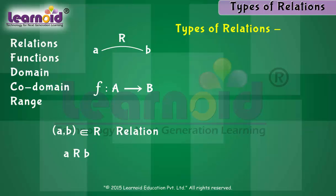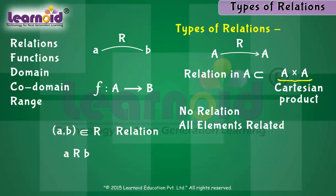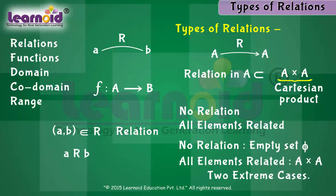We can define relations in the same set — for example, a relation in set A. We know that any relation in set A is a subset of A cross A, which is the Cartesian product of A. So, there may be no relation among elements of set A, or all elements of set A may be related. Thus, the empty set phi and A cross A are two extreme relations.